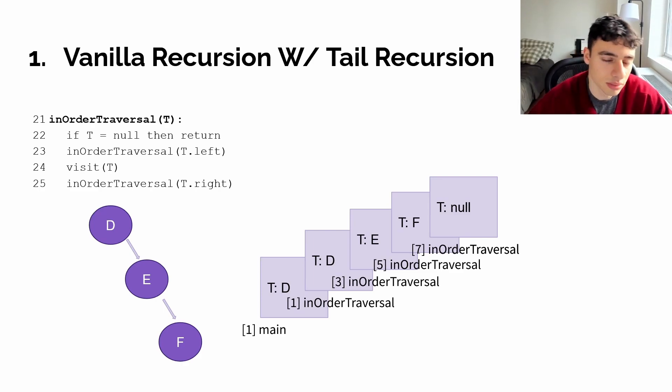Let's say our binary tree was actually a linked list, so it only had right children. In this case, the largest our call stack would get would be five frames. However, let's just suppose for a second that the compiler was smart enough to detect that this was going to be a linked list. If that were the case, then it could optimize this a little bit by popping off the previous frame at line 25 before moving on to the next frame.